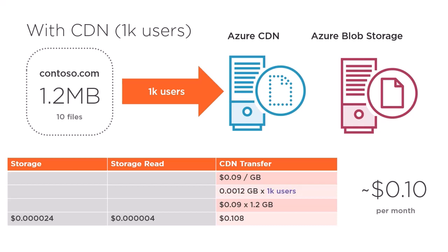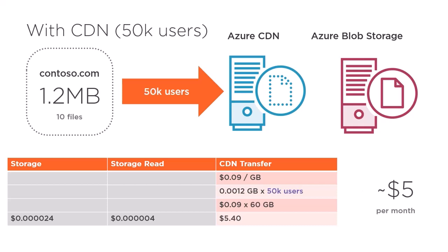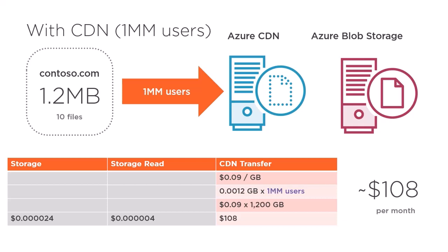With 1,000 users, we might pay around 10 cents to host the site for a month. With 50,000 users, we can see a pattern where cost is going up linearly, now amounting to about $5. This is the threshold where, in our scenario, we match the price to serve 1 million raw storage requests. Now, bringing us back to serving 1 million unique users, this brings the total to $108. This exercise should illustrate that storage costs will only be a fraction of what you'll be billed compared to CDN costs.